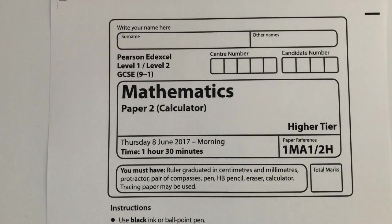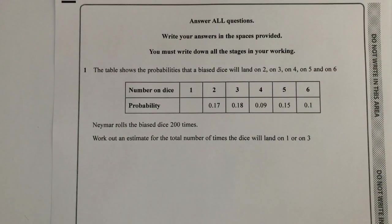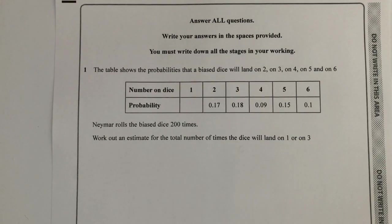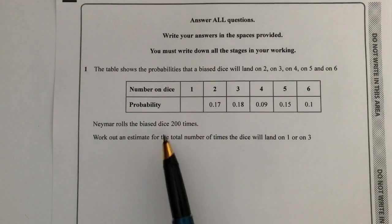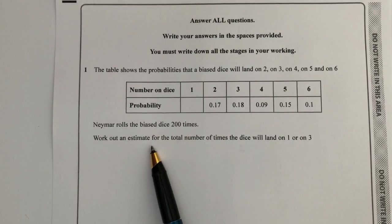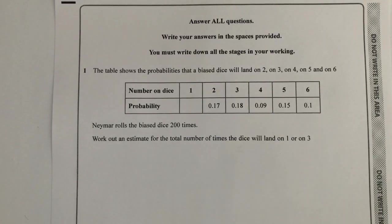We're going to move on then with question number one that deals with probability. The table shows probabilities that a biased dice will land on a 2, 3, 4, 5 and 6. This guy rolls the biased dice 200 times — work out an estimate for the total number of times the dice will land on a 1 or a 3.